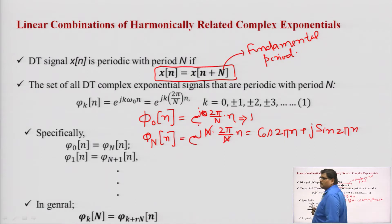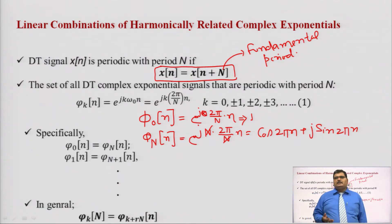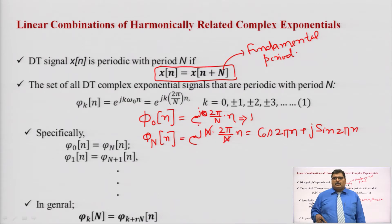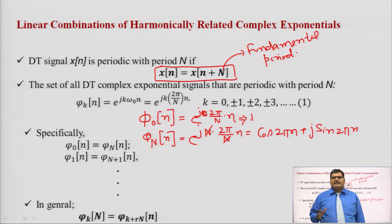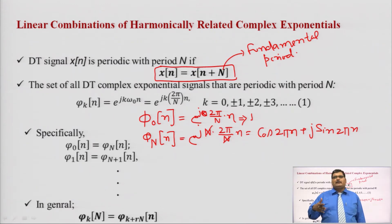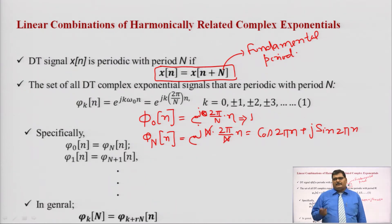So for n = 0, cos(0) + j sin(0) = 1. If you put n = 1, it becomes cos(2π) + j sin(2π), whose value is again 1. For any value of n you put, the result φ_N(n) will always be 1.